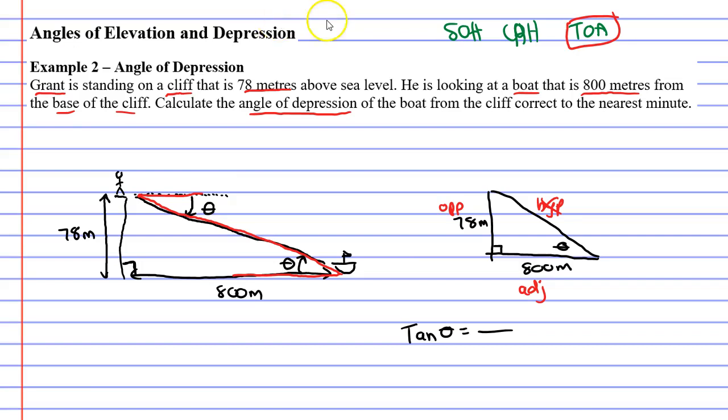acronym TOA, you'll notice it goes T then O then A, so we've got to have O at the top of the fraction, A at the bottom. So O or opposite was 78 meters, that goes at the top, and A or adjacent was 800, that goes at the bottom.